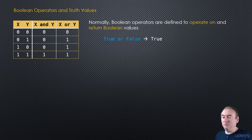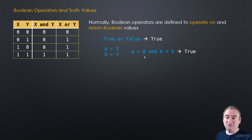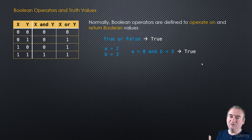For example, if we have true or false, that will return true. We could even use comparisons like this. When a equals 2 and b equals 3, then a is greater than 0 — that's true — and b is less than 5 — that is true — and then true and true will return true. So we deal with Boolean inputs and we have Boolean outputs.